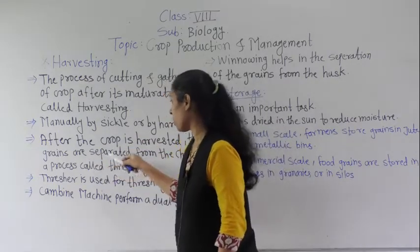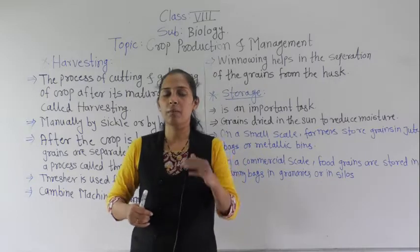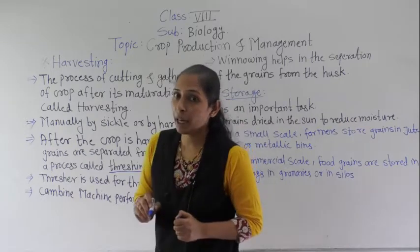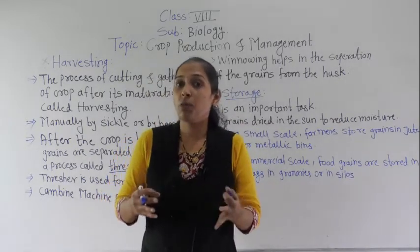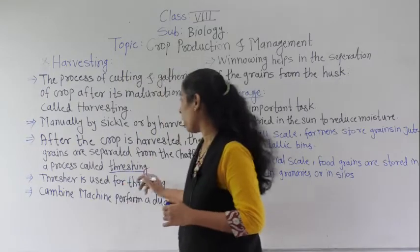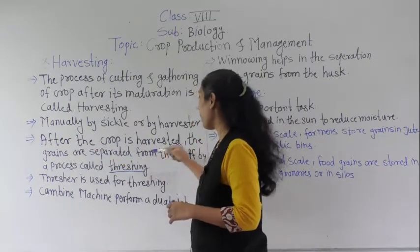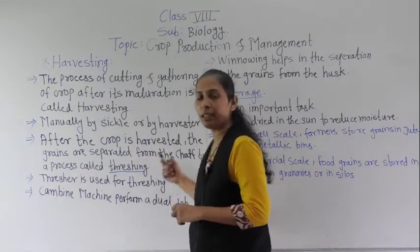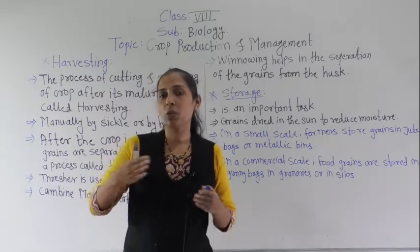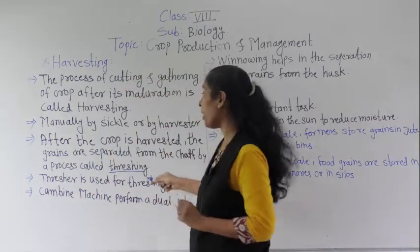After the crop is harvested, the grains are separated from the chaff by a process called threshing. In threshing, the chaff or unwanted material present in the crops is removed. The grains are separated from the plant or from the stems of the crops, and that process is called threshing.